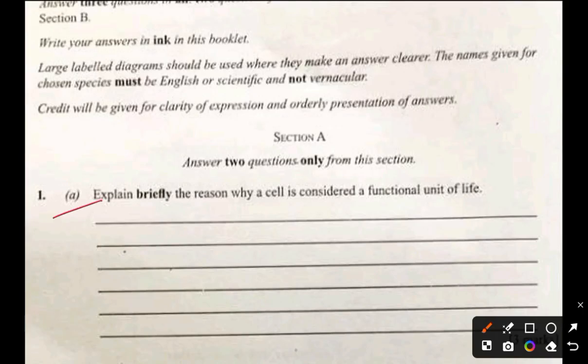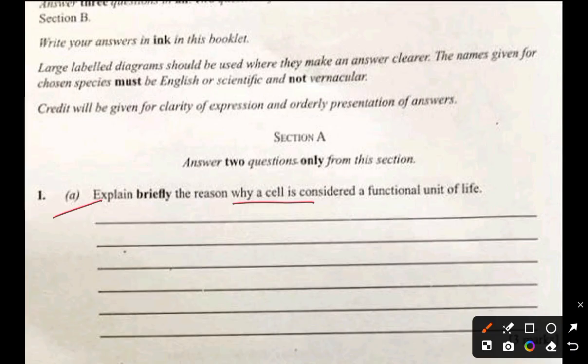Question one: explain briefly the reason why a cell is considered a functional unit of life. A cell is considered a functional unit of life because it performs all essential functions like metabolism, growth, reproduction, and response to stimuli. Every living organism is made up of cells, and life processes like growth, excretion, and respiration all occur at the cellular level.